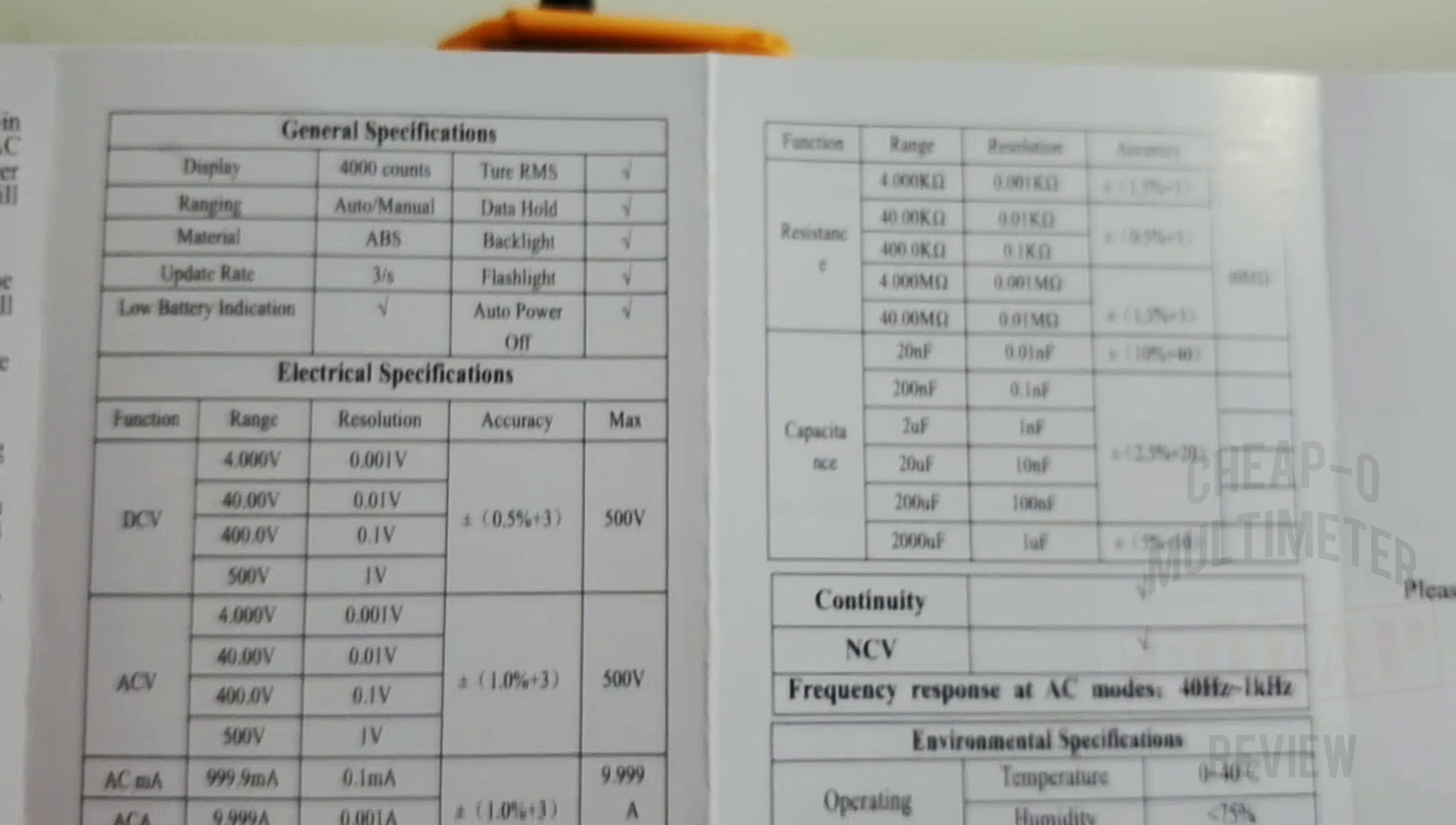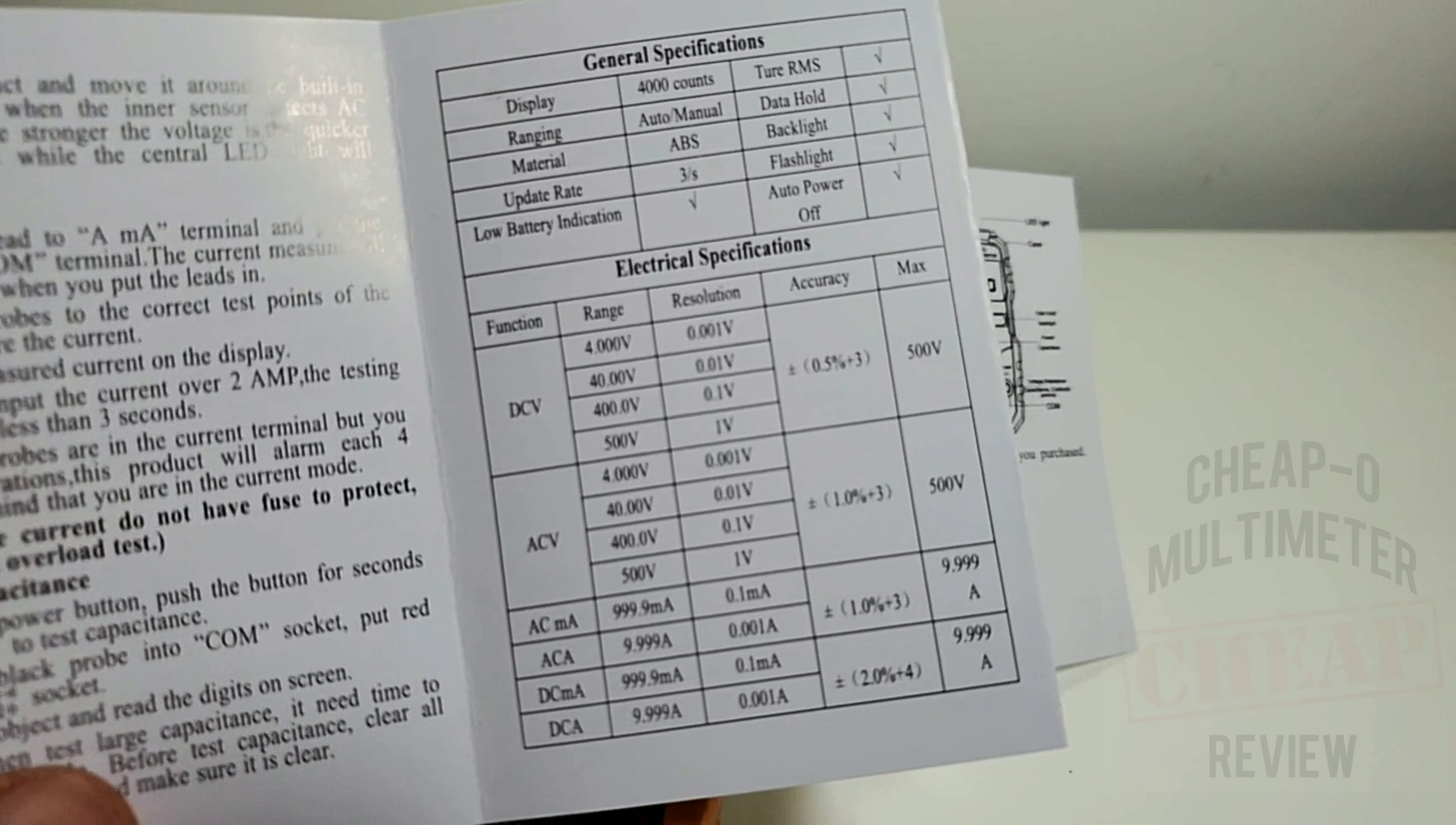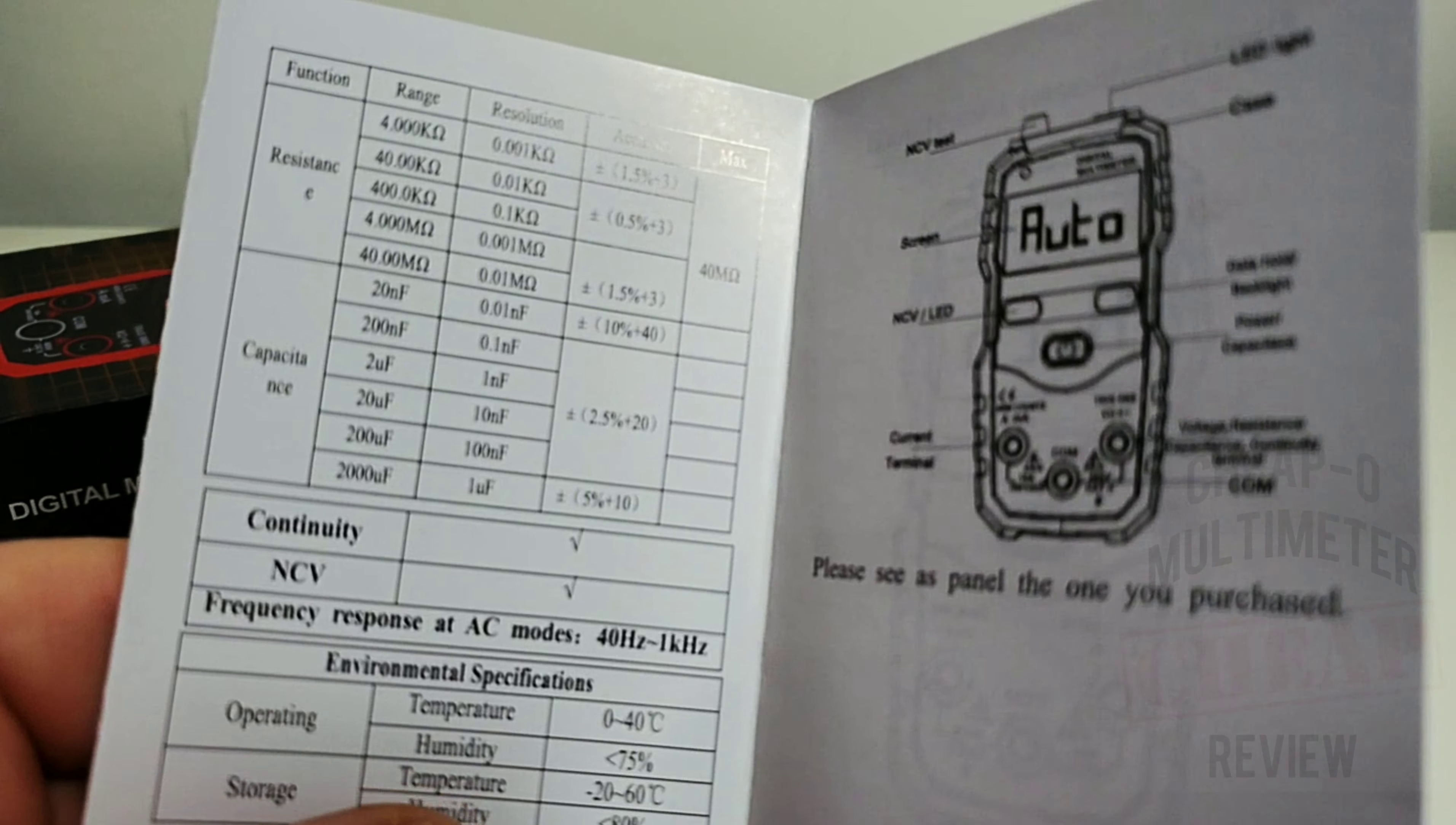Speaking of specs, hey nothing to get too excited about. We're talking 500 volts AC/DC. And let's check out this capacitance range, it's kind of sad, it's only 2000 microfarad. Oh, what are they thinking?